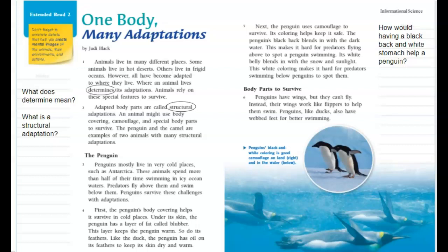The penguin's body coverings help it survive in cold places. Under its skin, the penguin has a layer of fat called blubber — this layer keeps the penguin warm. So do its feathers. Like the duck, the penguin has oil on its feathers to keep its skin dry and warm.